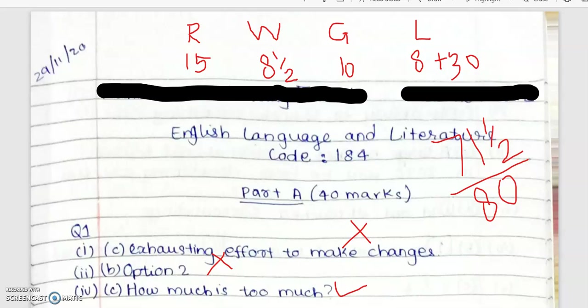Hello students, we are evaluating another paper of Mock 1, CBSC English Language and Literature, subject code 184. The candidate has responded to the CBSC release sample question paper as Mock 1. We are going to use the strategy of one star and three wishes — that means we are going to identify one quality, the best quality in this answer script, and suggest three suggestions for improvement.